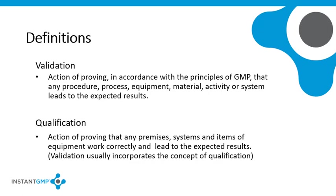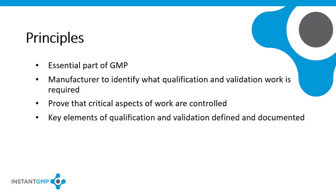There are three key points to take from these definitions. The evidence must be documented. Validation applies to several aspects of manufacturing, including process development, materials, personnel, and equipment. It should demonstrate that the system does what is expected of it. Validation is carried out against a set of criteria that are defined in advance, and these criteria are detailed in predefined protocol documents.